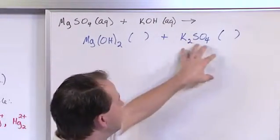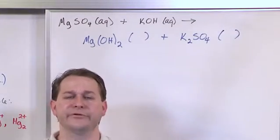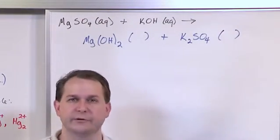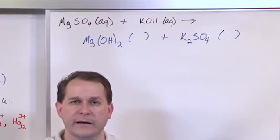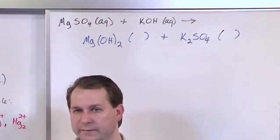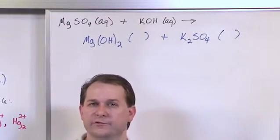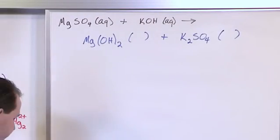So the bottom line is if both of these potential products, these are the only things that could possibly form. If they're both soluble and if they both dissolve and dissociate in water, then this reaction really doesn't happen because nothing really forms. If at least one of them is an insoluble thing that's solid, it falls out of solution, and it doesn't dissolve, then we say this reaction happens. So we look at magnesium hydroxide.